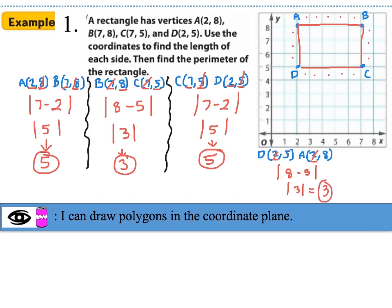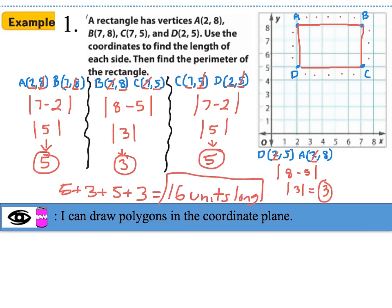Now that we have each side of the rectangle, let's find the perimeter by adding them all up: 5 + 3 + 5 + 3 = 16 units. That is the perimeter of our rectangle.